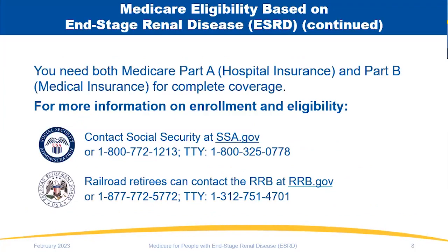There are requirements for Medicare coverage for ESRD: you need to have worked the required amount of time, or be already getting or eligible to receive Social Security or Railroad Retirement Board benefits. It can also apply through a spouse or dependent child of a person who meets these requirements. You also need to have both Medicare Part A — hospital insurance — and Part B — medical insurance — for complete ESRD coverage. Part B is especially important for outpatient services, including coverage of immunosuppressive drugs or transplant drugs, which are critical if you have ESRD.